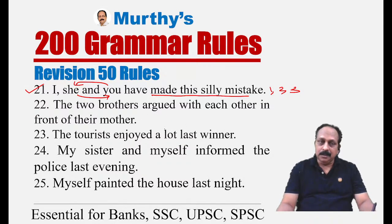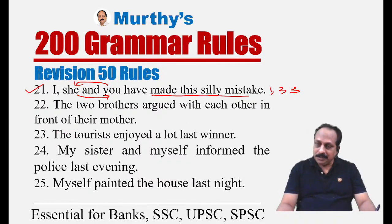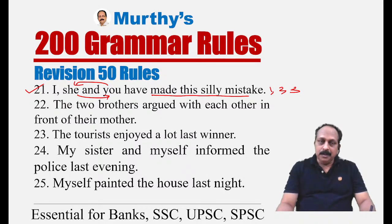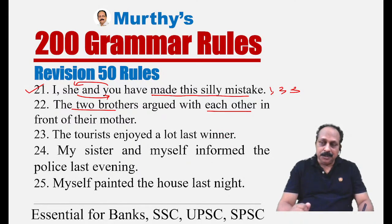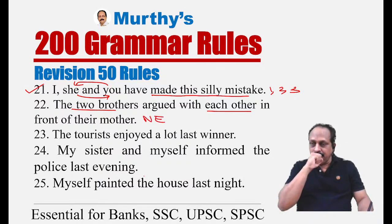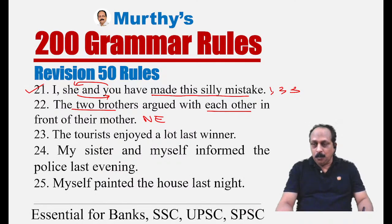Sentence twenty-two: 'The two brothers argued with each other in front of their mother.' Reciprocal pronouns: 'each other' is used for two persons or things, 'one another' is used for more than two. Since the sentence talks about two brothers, 'each other' is correct. No error.